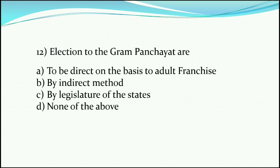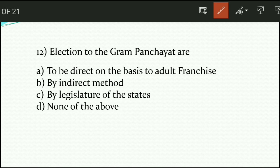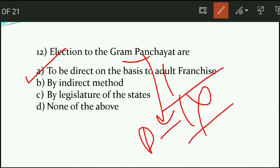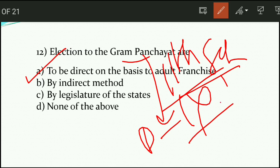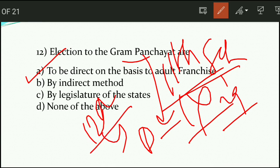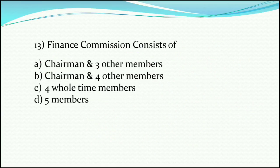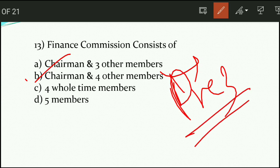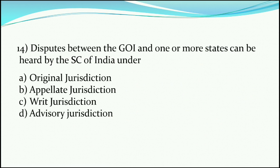Question number twelve: elections to the gram panchayats are — the answer is option A, that is to be direct on the basis of adult franchise. Gram panchayats are in Part 9 of the Indian Constitution and the 11th Schedule, which has 29 items. The 12th Schedule covers municipalities, while the 11th Schedule covers panchayats. Question number thirteen: the Finance Commission consists of — answer B is correct — a chairman and four other members, all appointed by the President of India. The Finance Commission is provided under Article 280.